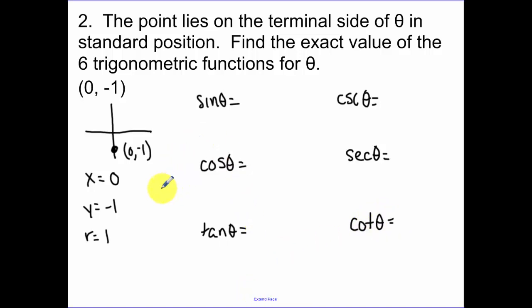Sine is y over r, negative 1 over 1, or negative 1. The reciprocal of negative 1 is negative 1. Cosine is x over r. So that's 0 over 1, which simplifies to 0. Secant: when I take the reciprocal, we can't have 0 in the bottom, so this is undefined. Tangent is y over x, negative 1 over 0. So that equals undefined. Now when I take the reciprocal of negative 1 over 0, we get 0 over negative 1, which simplifies to 0.